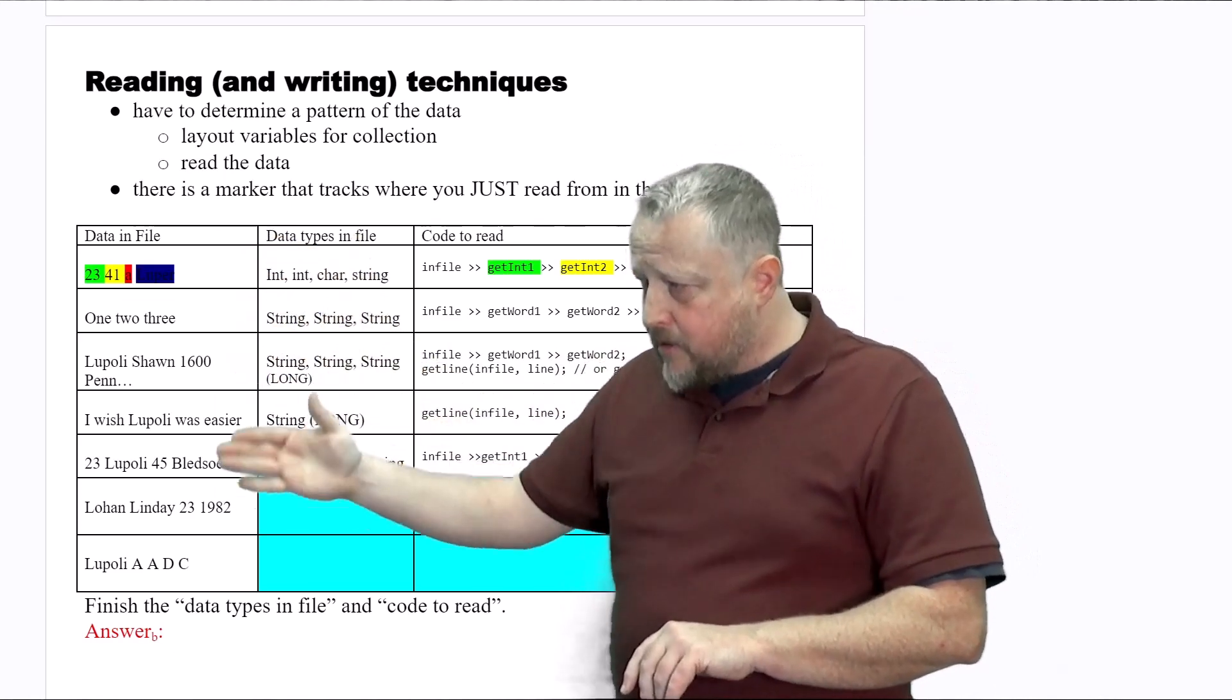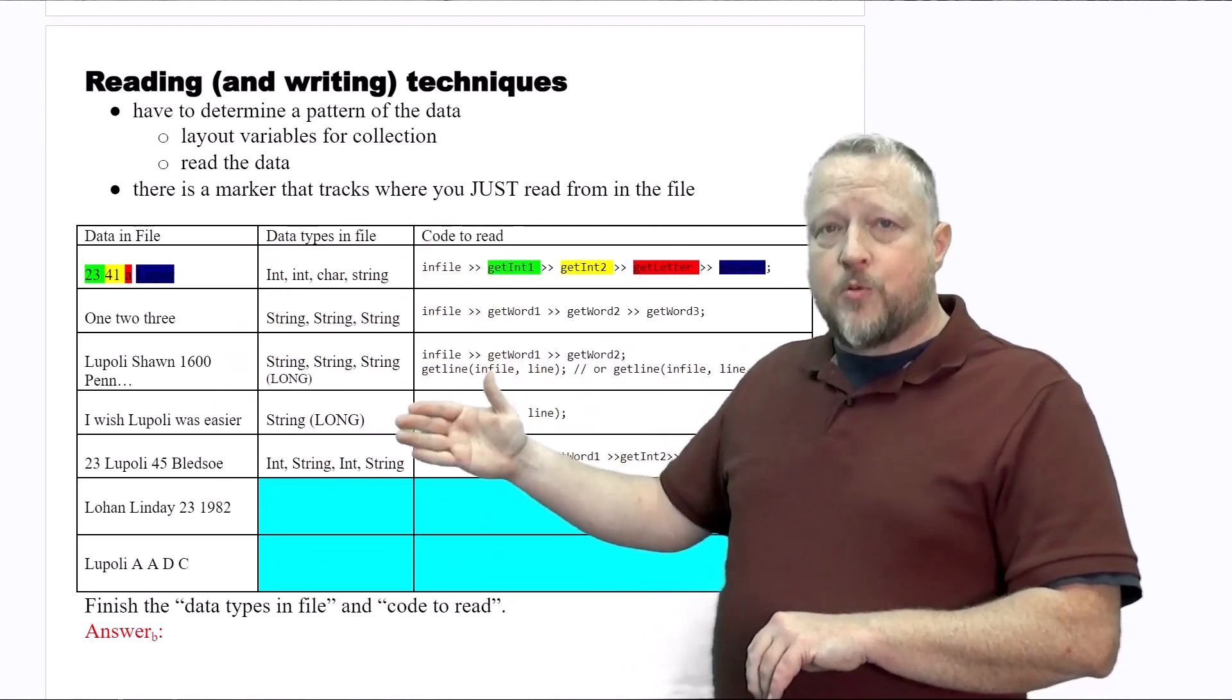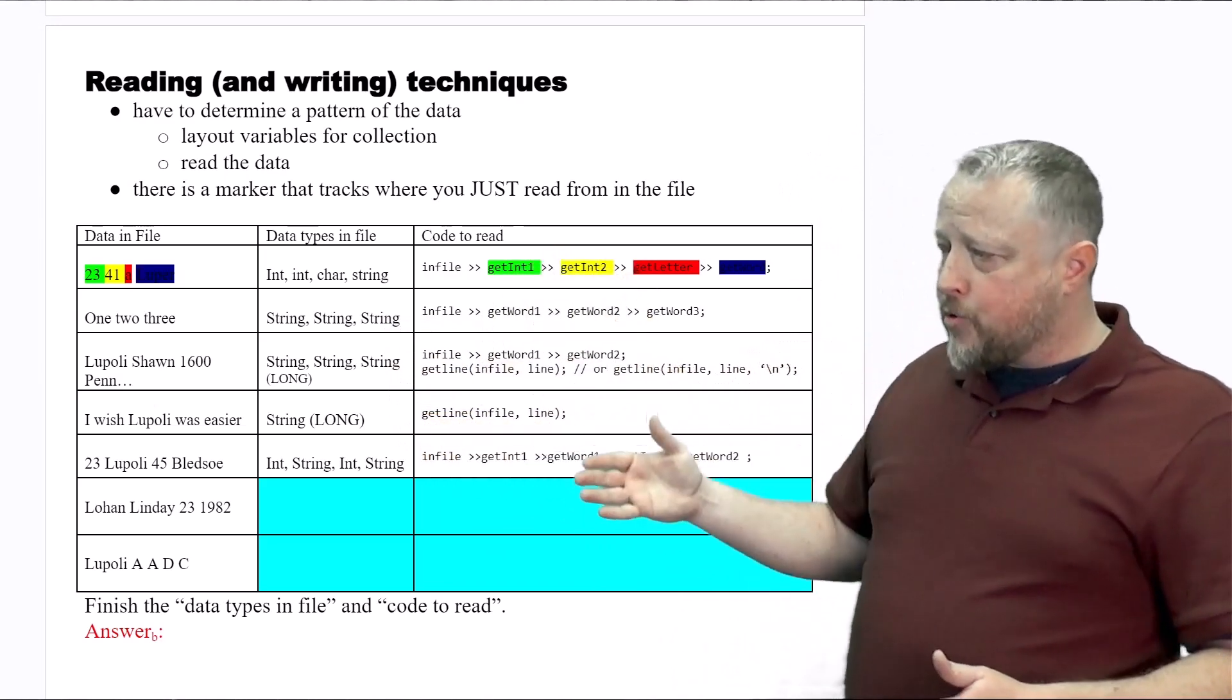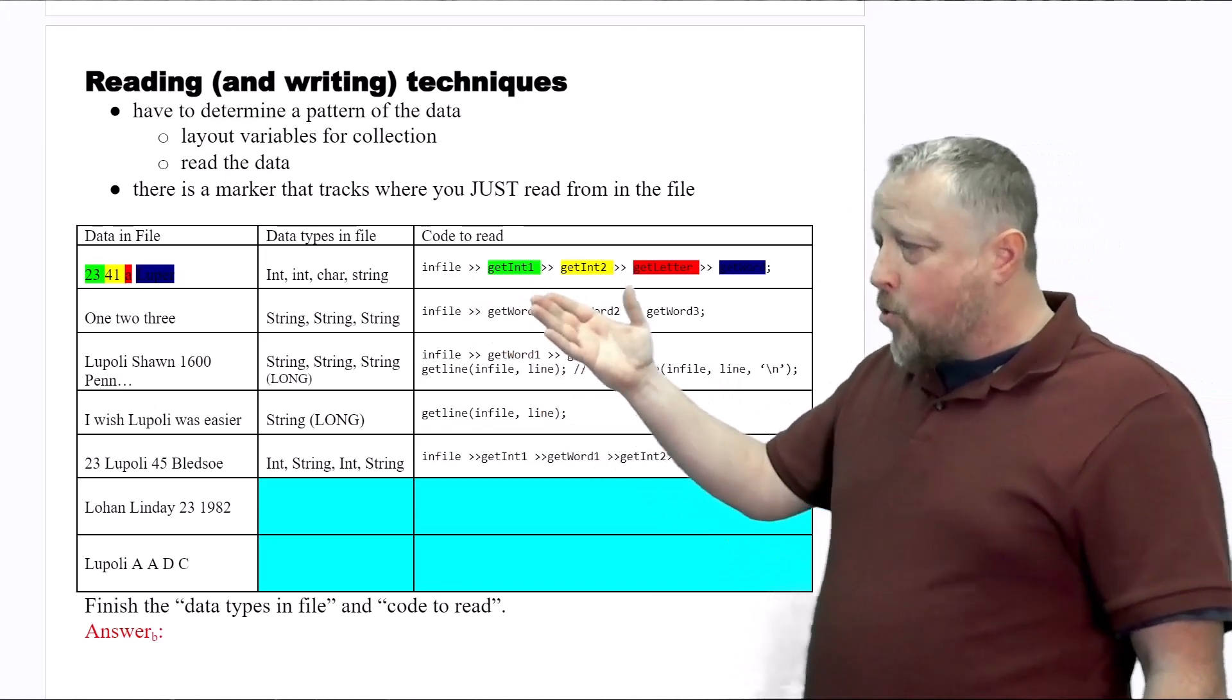Number one, we need to look at the data in the file. Then we need to figure out what data types would support those the best and then the actual code to read. To be honest with you, the code to read is real easy. You just got to get the order right.